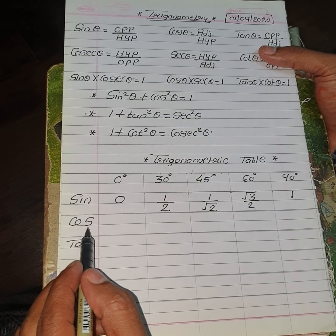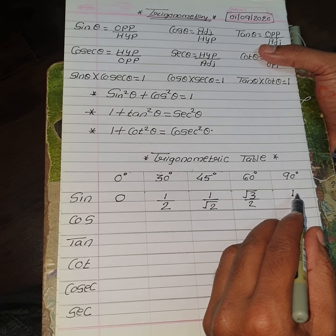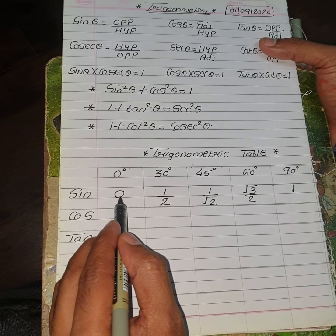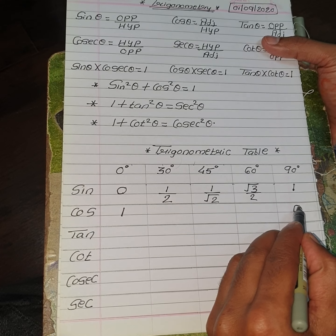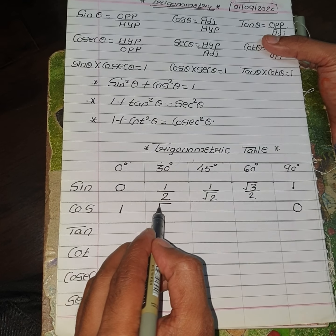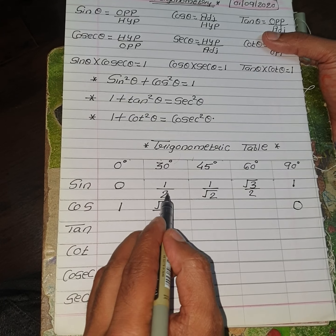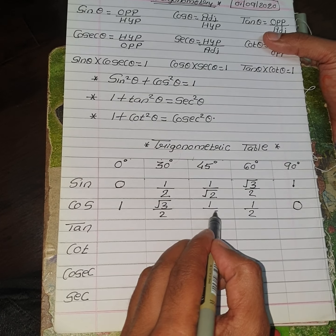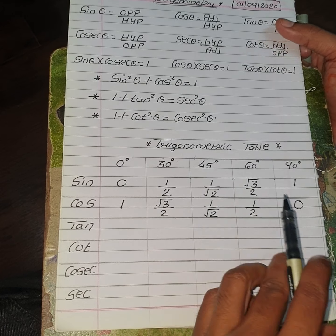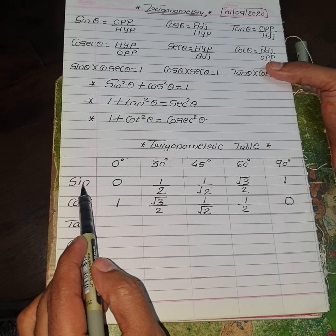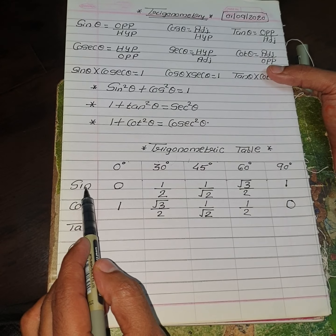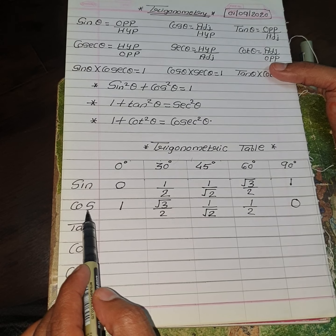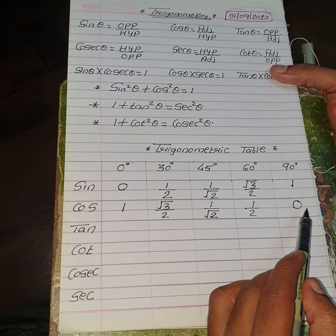For Cos, just change the position of the Sin values. So Cos 0 is 1, Cos 30 is root 3 upon 2, Cos 45 is 1 upon root 2 as it is, Cos 60 is 1/2, and Cos 90 is 0. Once you remember the values for Sin, you can easily find out the value of Cos by just changing the position.